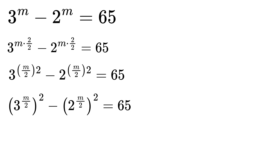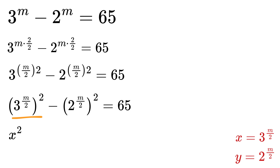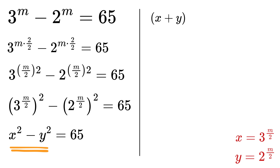Here comes the magic. Assume a variable x as 3 raised to m over 2, and then assume another variable y as 2 raised to m over 2. Therefore, this expression will become x squared minus y squared equals 65. But using the difference of squares method, we know that this is the same as x plus y multiplied by x minus y, and that equals 65.